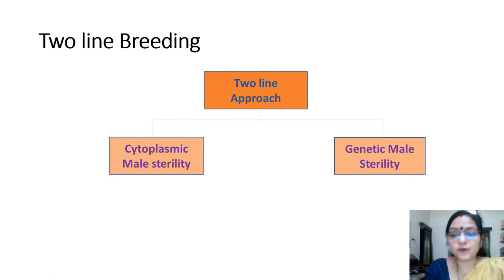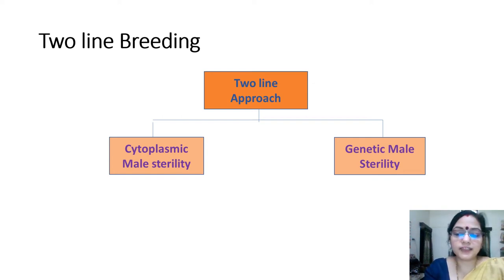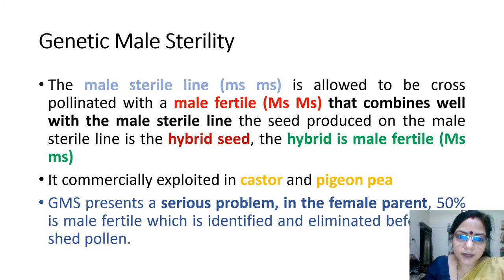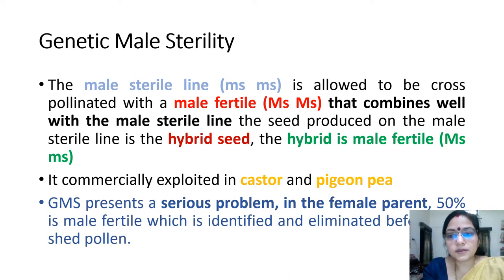Now, coming to two-line breeding: the two-line approach combines cytoplasmic male sterility or genetic male sterility. In genetic male sterility, the male sterile line is allowed to be cross-pollinated with a male fertile line.